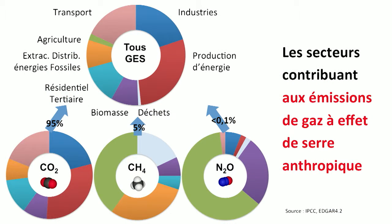Looking at emissions and the released masses by industrial sector, CO₂ represents 95% of the biggest mass. The other gases — methane accounts for 5% and almost nothing for the others. The various industries include combustion of coal, gas, and oil, energy production, industry, transportation, and residential and tertiary uses.